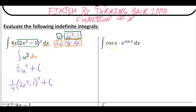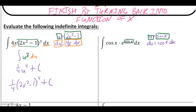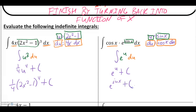For the next example, we have the integral of cosine of x times e to the sine x. Recognize that e to the sine x always requires chain rule, so that exponent, sine x, is our inside function u. Differentiating u: the derivative of sine is cosine of x, bringing in dx. Substituting: u replaces sine x giving e to the u, and du replaces both cosine x and dx. The integral of e to the u is e to the u plus c. Turning back into a function of x: e to the sine x plus c.